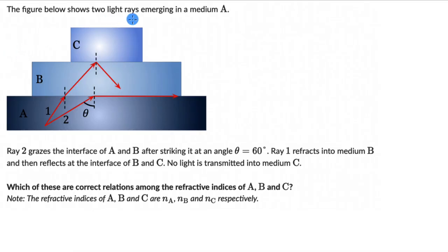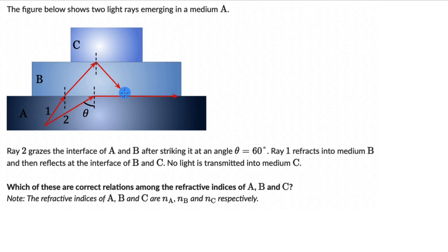For the second question, we have two light rays emerging in medium A. Ray two grazes the interface of A and B after striking it at an angle of 60 degrees. Ray one refracts into medium B and then reflects at the interface of B and C — no light is transmitted into medium C. We need to find the correct relations among the refractive indices NA, NB, and NC. Choose two answers from the given options.